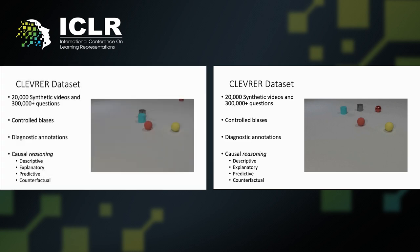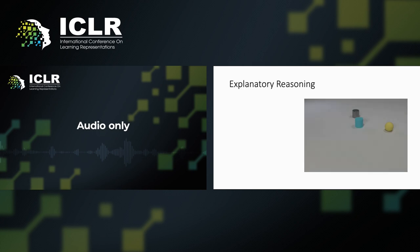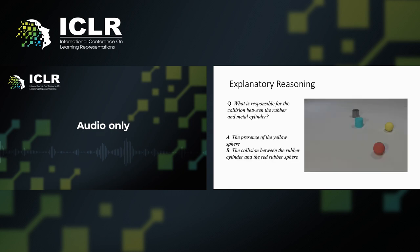Here you can find an example of the videos from the dataset. Among the four types of questions, descriptive questions ask the model to describe an event that happened during the video. Explanatory questions ask the model to explain the cause of a specified event by choosing another event or object that is responsible for it. In this example, the collision between the rubber sphere and cyan cylinder pushes the cylinder to make another collision with the other metal cylinder. Therefore, we regard the second collision to be caused by the first.